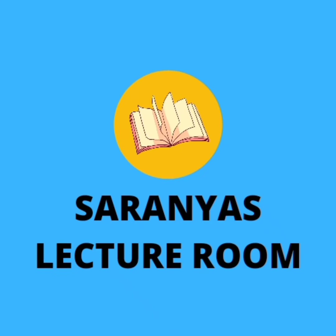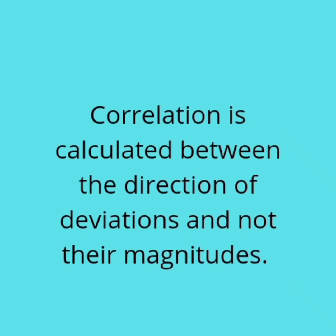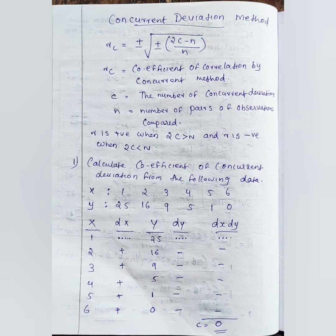If you are interested in this video, subscribe to our channel. It will be useful for you. Here is the concurrent deviation method. In this field we do correlation between directions of deviations. The equation is: Rc is equal to plus or minus root of 2c minus n divided by n. This is the equation in the concurrent deviation method.